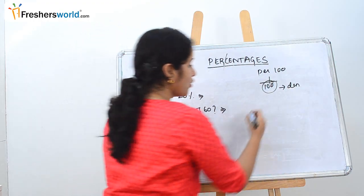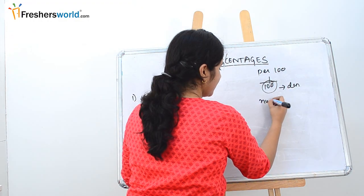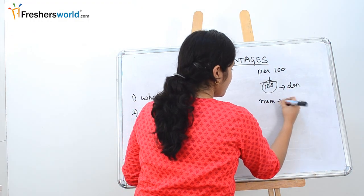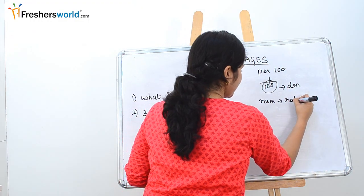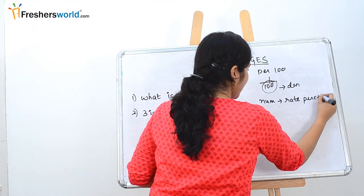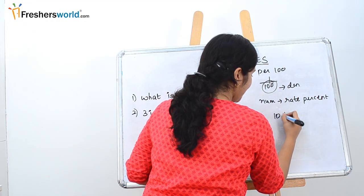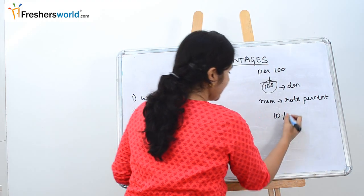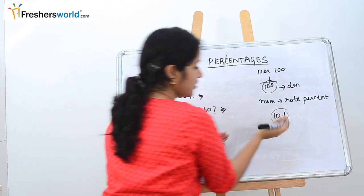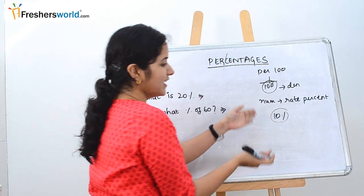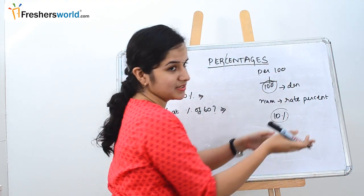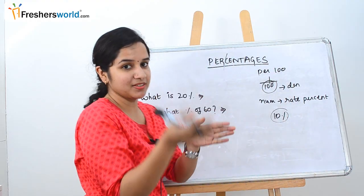So what do we call the numerator here? The numerator we call the 'rate percent.' That's why if you get something like 10 percent or 20 percent, this always refers to the numerator.